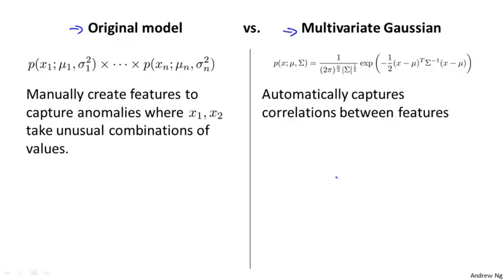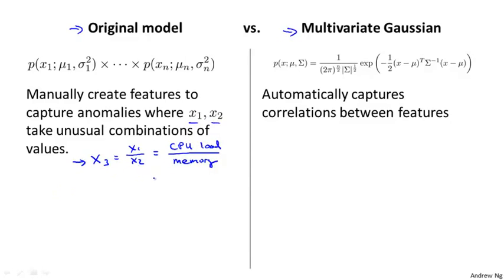If you want to use the original model to capture unusual feature combinations, you need to create an extra feature — such as x3 equals x1 over x2, maybe CPU load divided by memory use. You need to create extra features for cases where x1 and x2 together take on an unusual combination of values, even though x1 by itself and x2 by itself look perfectly normal. But if you're willing to spend the time manually creating such extra features, the original model will work fine. Whereas the multivariate Gaussian model can automatically capture correlations between different features.